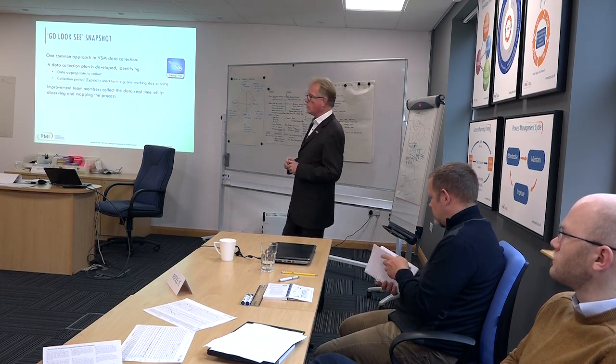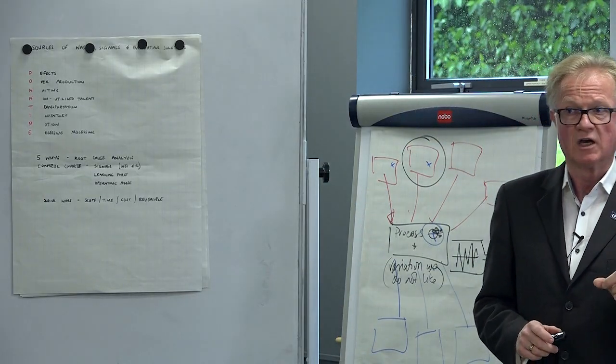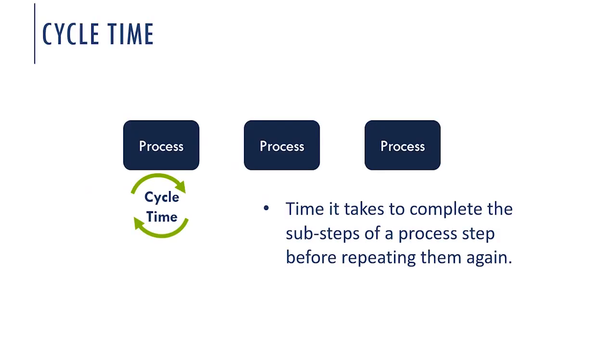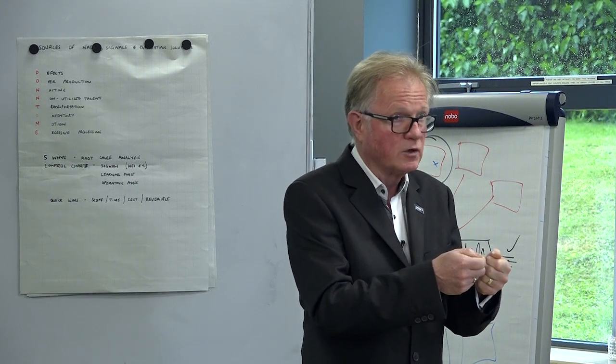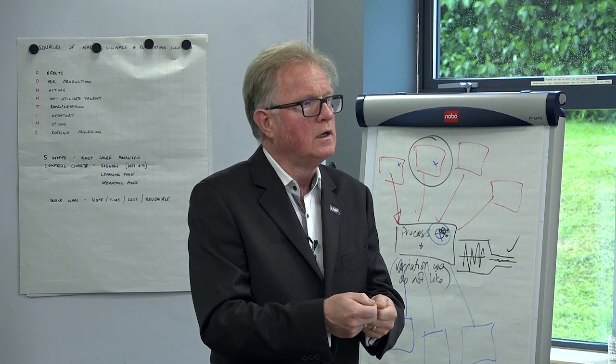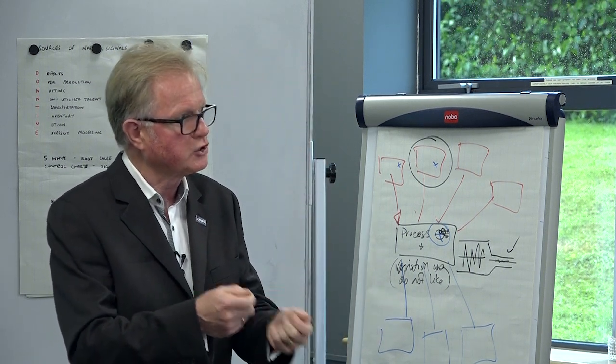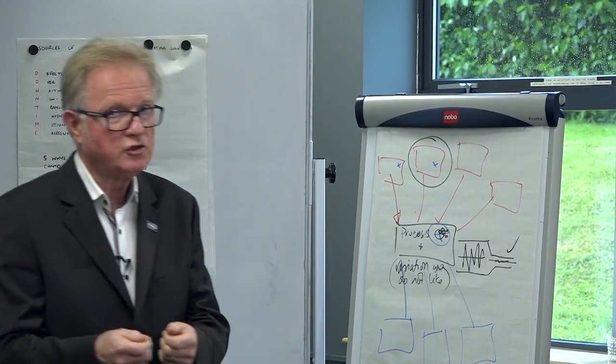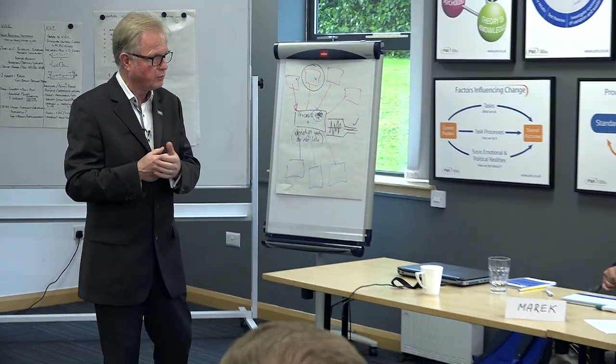Improvement team members collect the data in real time whilst observing and mapping the timing on the process. Cycle time is the time it takes one specific process to move from the first activity to the last activity within a process step. What's important when generating cycle time — going back to our previous conversation — is not just the average. On average it might take two minutes, but what's more important is the range: the spread of results. Three might take one minute and three might take three minutes. Setting your value stream on an average means you'll be late in many cases.